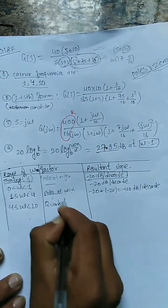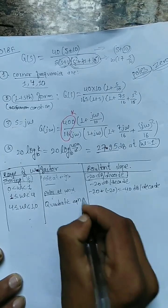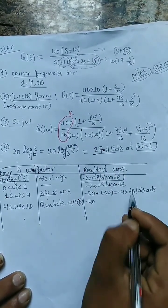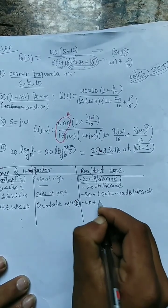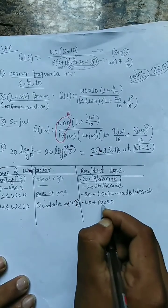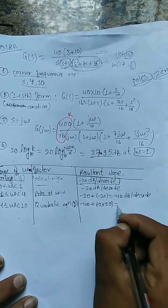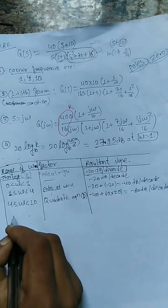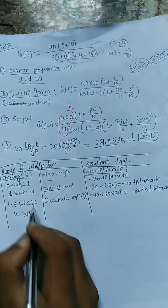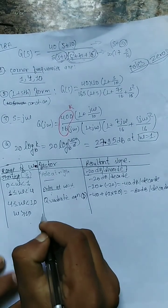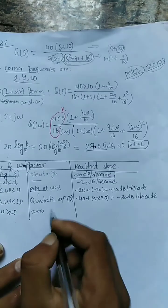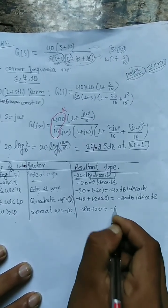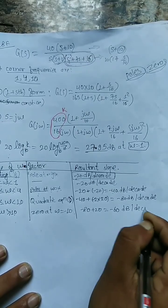The quadratic equation in the denominator contributes -40 dB/decade. So 2 × 20 = 40 dB. Combined with previous slopes, at ω ≥ 10: plus 20 minus 80 dB/decade gives -60 dB/decade per decade.